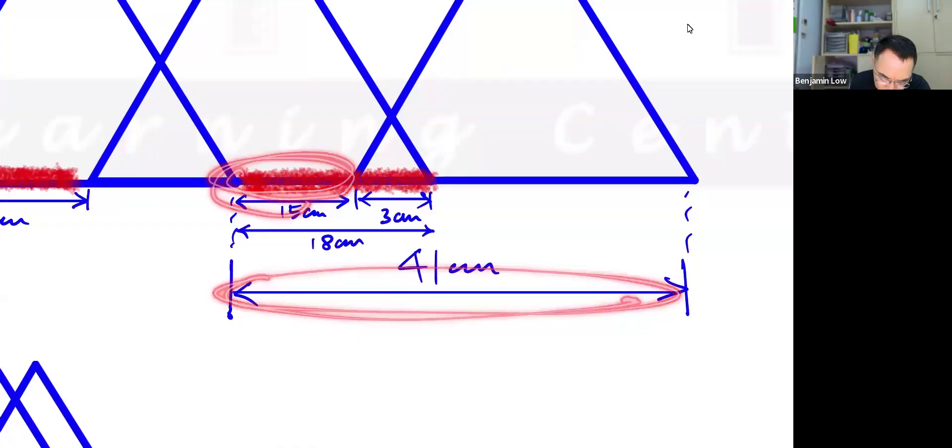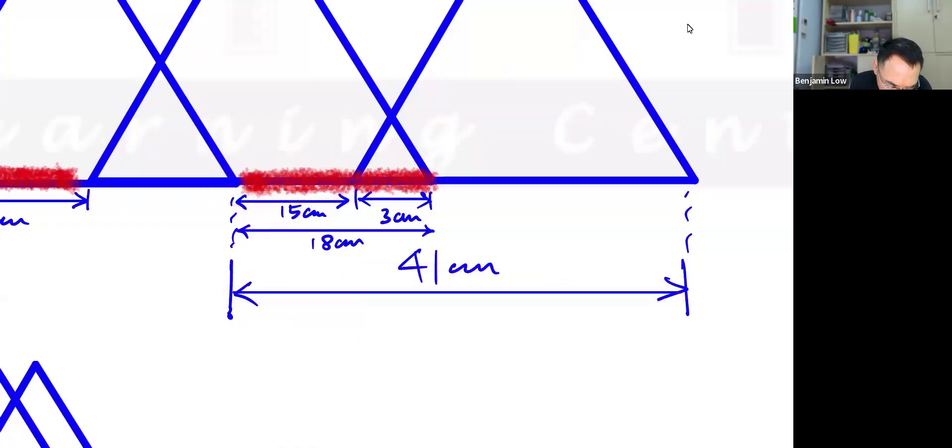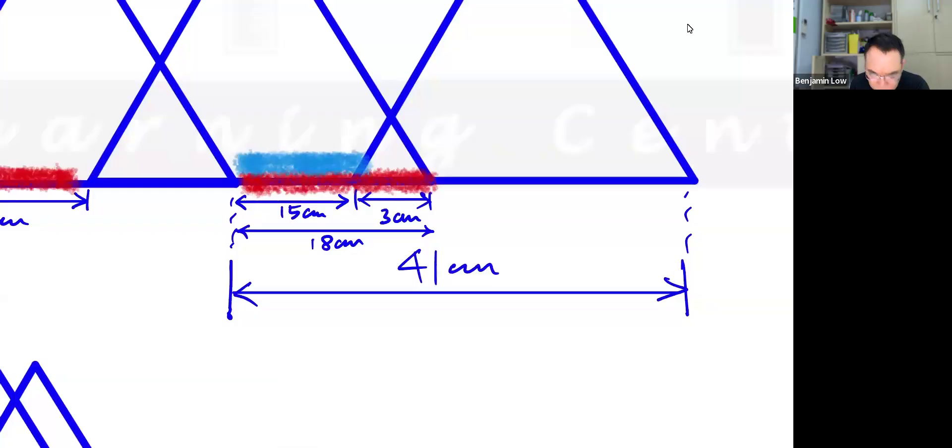if I now take 41—let me shade that with a different color again, just to be very clear. Let's say I shade using this. This portion would be 15—maybe a thinner line—this portion is 15, and this long line below is 41. So